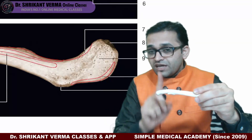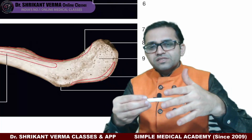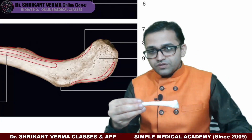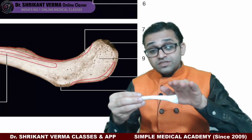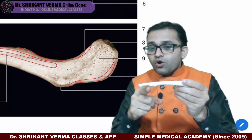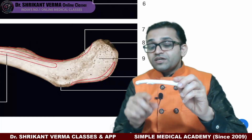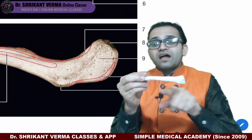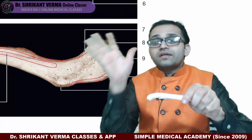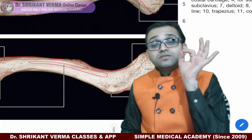Quick summary: lateral one-third — anterior border gives deltoid origin, posterior border gives trapezius insertion, superior surface is subcutaneous, inferior surface has coracoclavicular ligament. Medial two-thirds — anterior surface: pectoralis major; posterior surface: sternohyoid; superior surface: SCM; inferior surface: costoclavicular ligament. There is also the subclavian groove on the inferior surface, within which the subclavius muscle is found. Both sides have 'CC ligaments' — costoclavicular medially and coracoclavicular laterally.